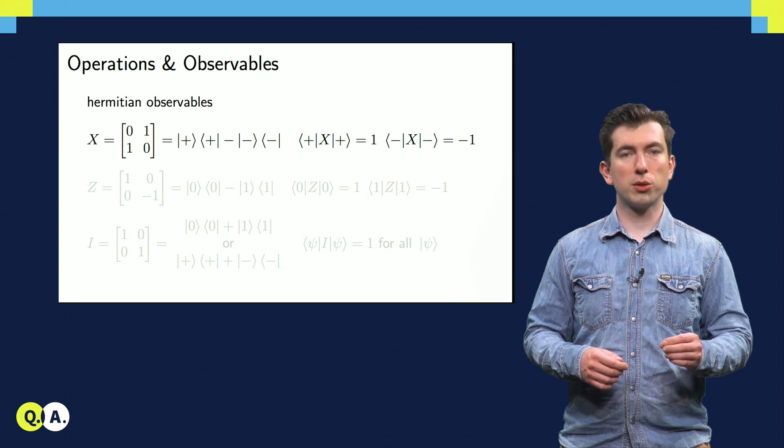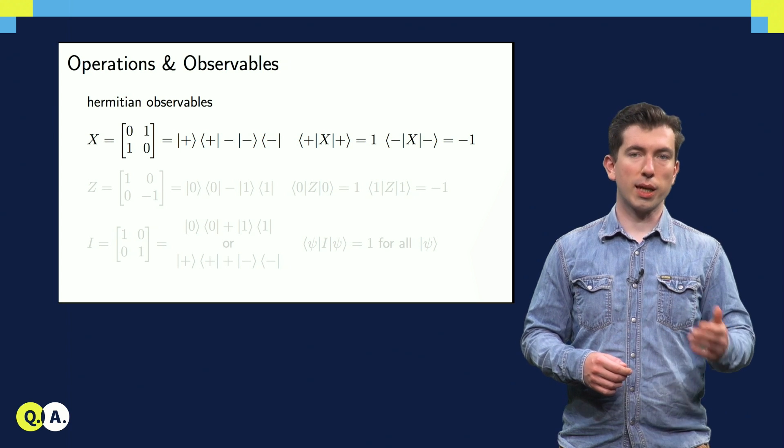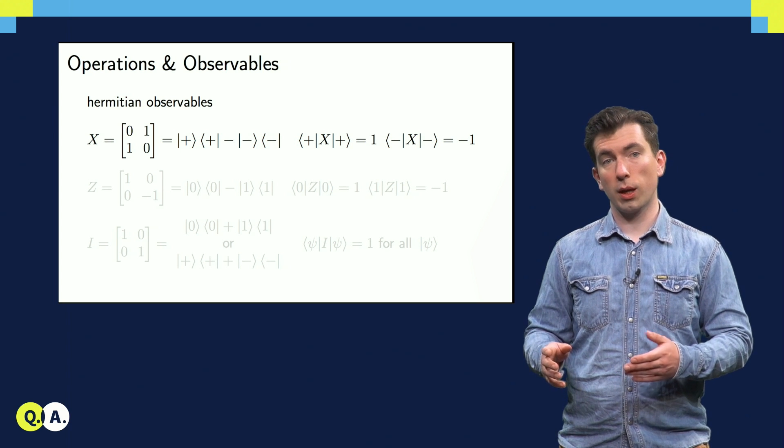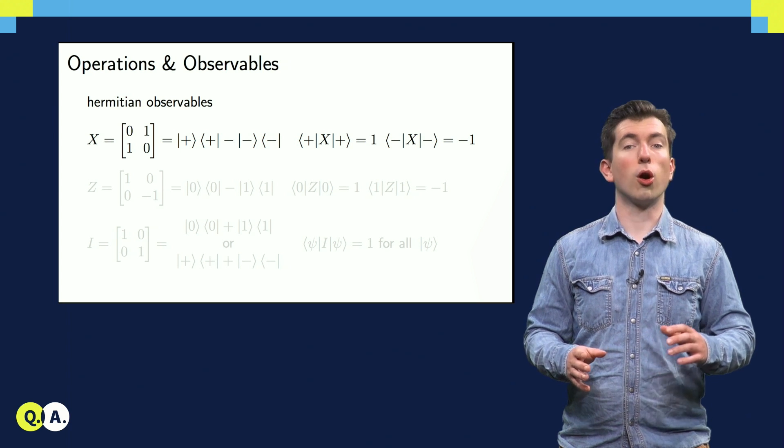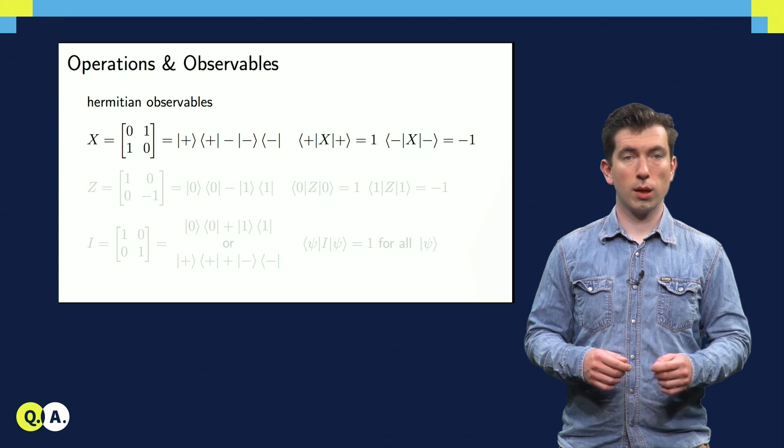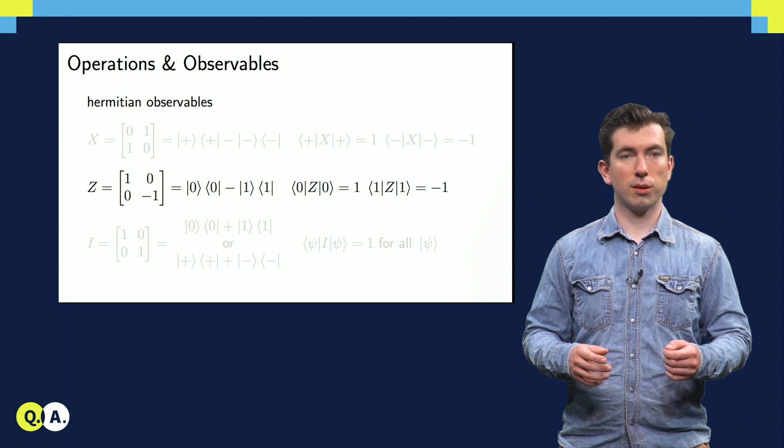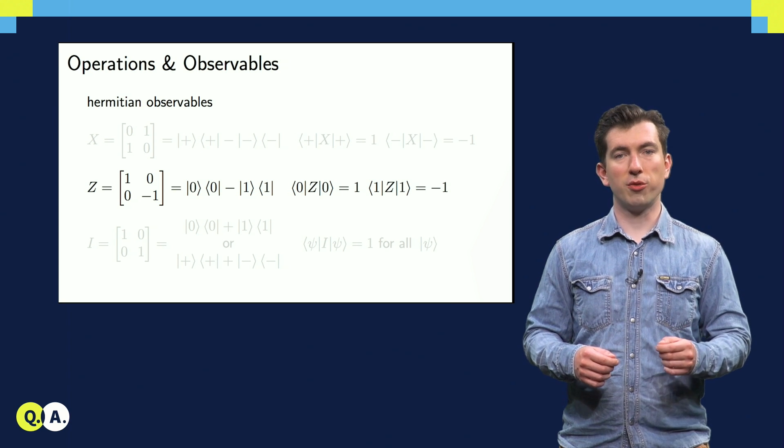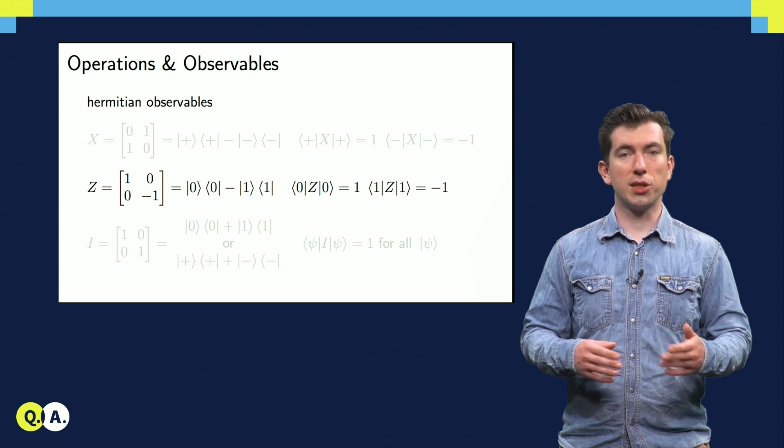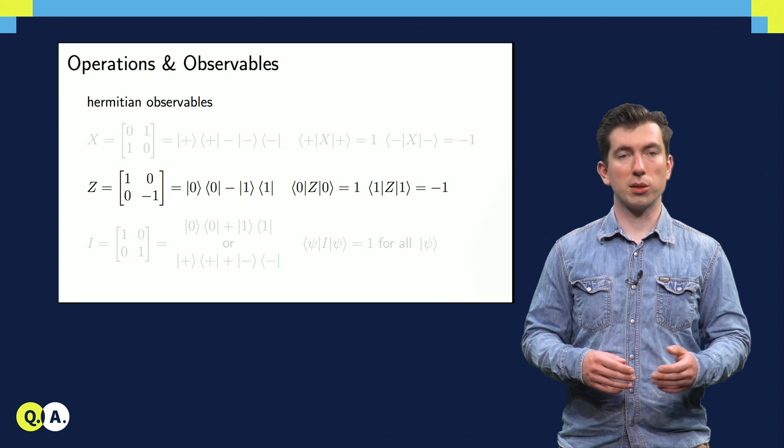Here, we've decomposed it into its eigenbasis, so that the ket bra terms are different than before, and we can see that its output values are plus and minus 1. Here's another matrix which is both unitary and Hermitian, the Pauli Z. It returns the exact same values as X, just for states in the 0-1 basis, instead of the plus-minus basis.